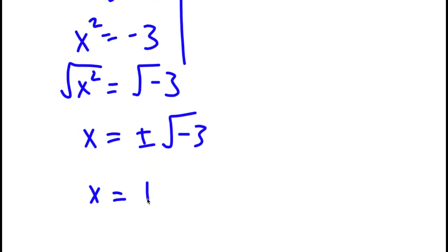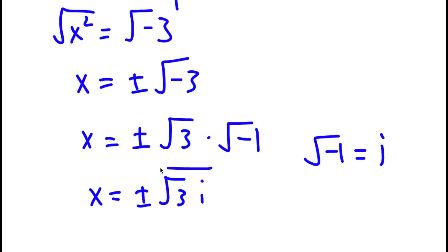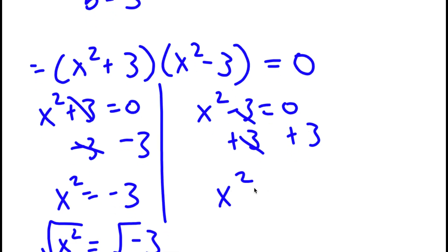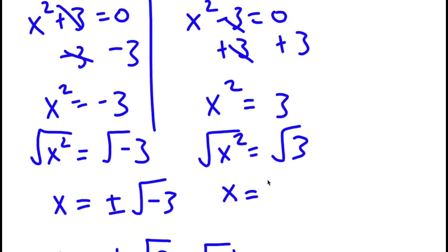The square root of negative 3 can be rewritten as the square root of 3 times the square root of negative 1. The square root of negative 1 is the imaginary number i. So x equals positive or negative square root of 3 times i — those are two solutions. For x squared minus 3 equals 0, adding 3 gives x squared equals 3, so x equals positive or negative square root of 3 — two more solutions.